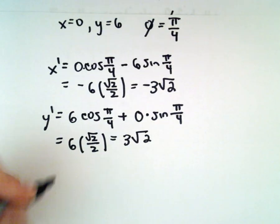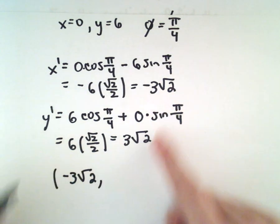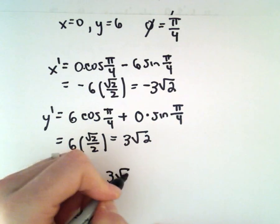So the point, after going through the rotation, its new coordinates will be negative 3 times the square root of 2, comma 3 times the square root of 2.